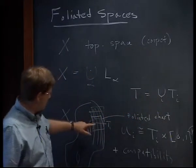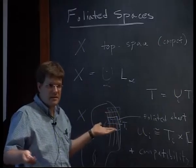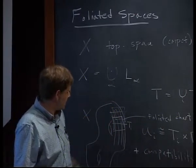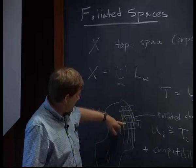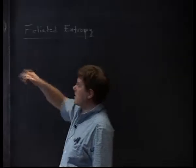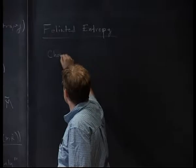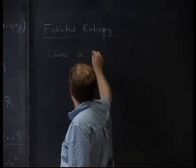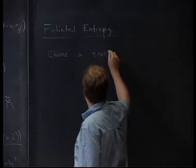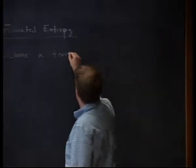I can put these transversals together for this covering. It's certainly not the case that each leaf intersects only one transversal at one point. In fact, one leaf might intersect every single transversal densely — like an irrational foliation on the torus, which most of you have probably seen. So for foliated entropy, I need to define a global measure on X, starting with a transverse invariant measure. Choose a transverse invariant measure — let me explain what that is.